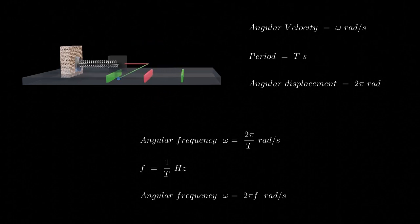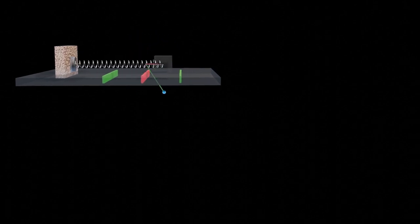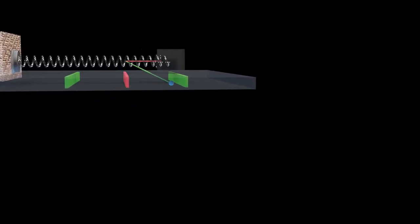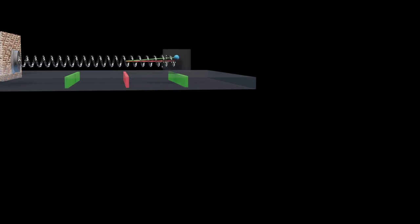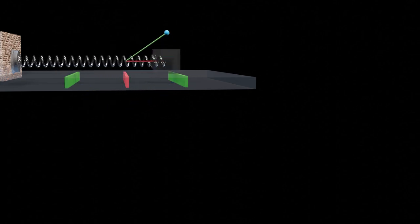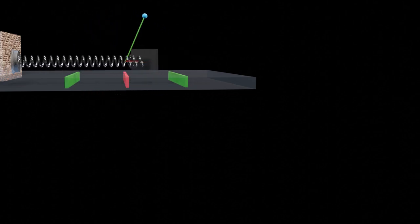Let's transition to understanding the oscillatory motion of the spring-mass system. In this diagram, the red line represents the horizontal component of the sphere's position as it undergoes rotational motion. This horizontal component is intricately linked to the oscillation of the mass attached to the spring. As the sphere completes its cycles, the corresponding motion of the attached mass follows a repetitive back-and-forth pattern. The relationship between the horizontal position of the sphere and the oscillation of the mass offers valuable insights into the oscillatory behavior of the entire spring-mass system.